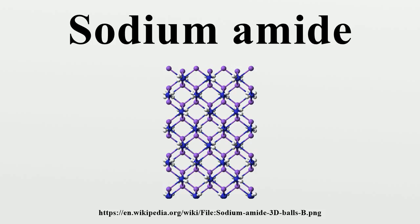Safety: Sodium amide reacts violently with water to produce ammonia and sodium hydroxide, and will burn in air to give oxides of sodium and nitrogen. The reactions are: NaNH2 + H2O → NH3 + NaOH; and NaNH2 + 4 O2 → Na2O + 2 NO2 + 2 H2O. In the presence of limited quantities of air and moisture, such as in a poorly closed container, explosive mixtures of peroxides may form. This is accompanied by a yellowing or browning of the solid. As such, sodium amide is to be stored in a tightly closed container under an atmosphere of inert gas. Sodium amide samples which are yellow or brown in color represent explosion risks.